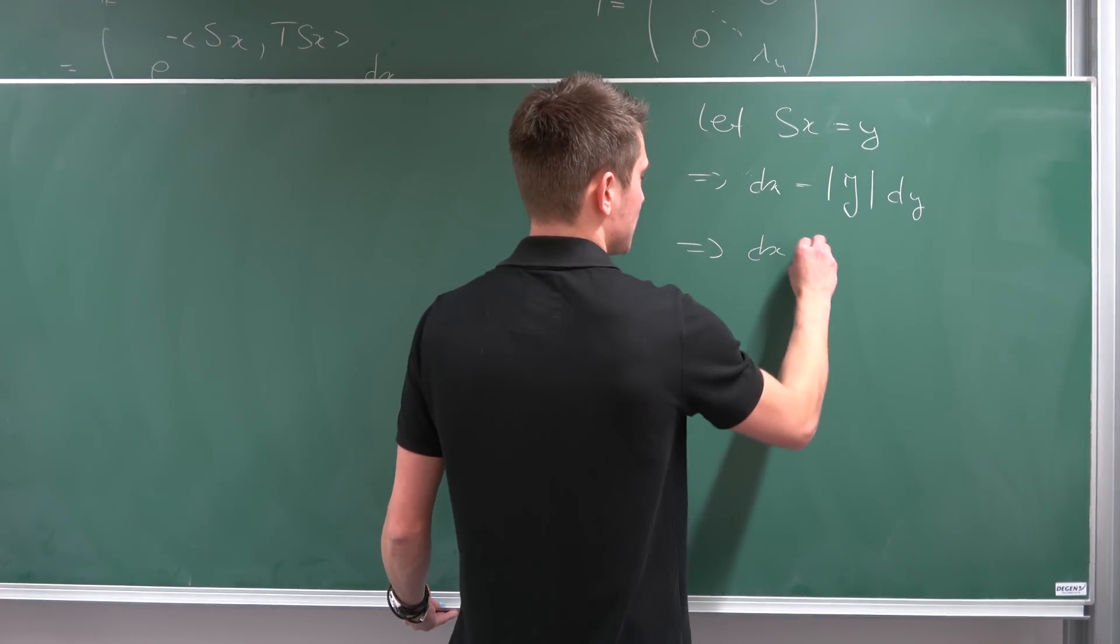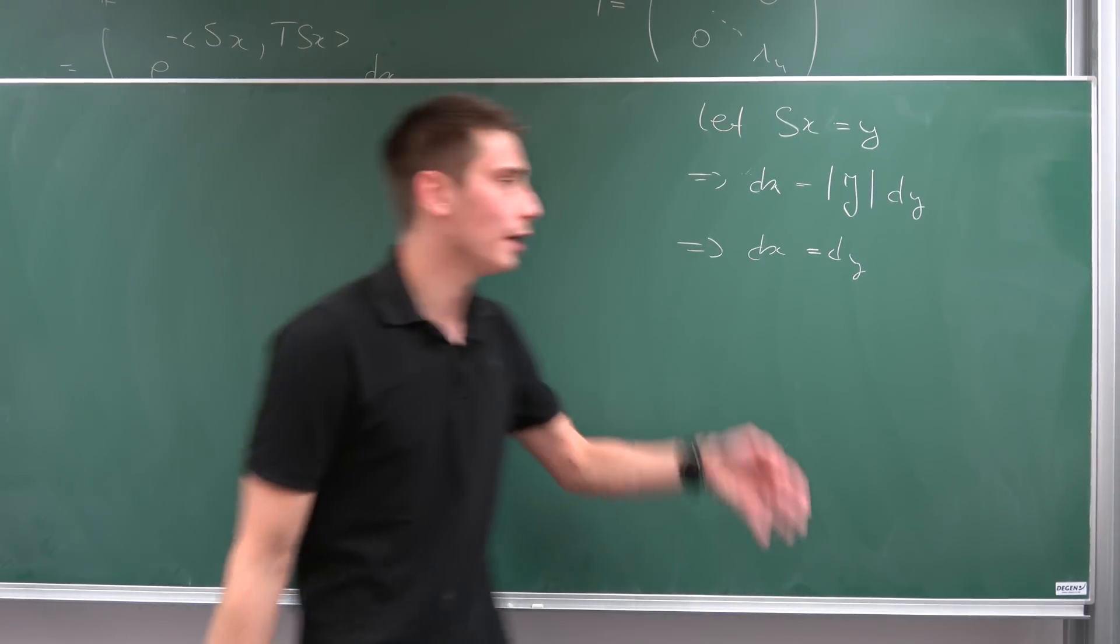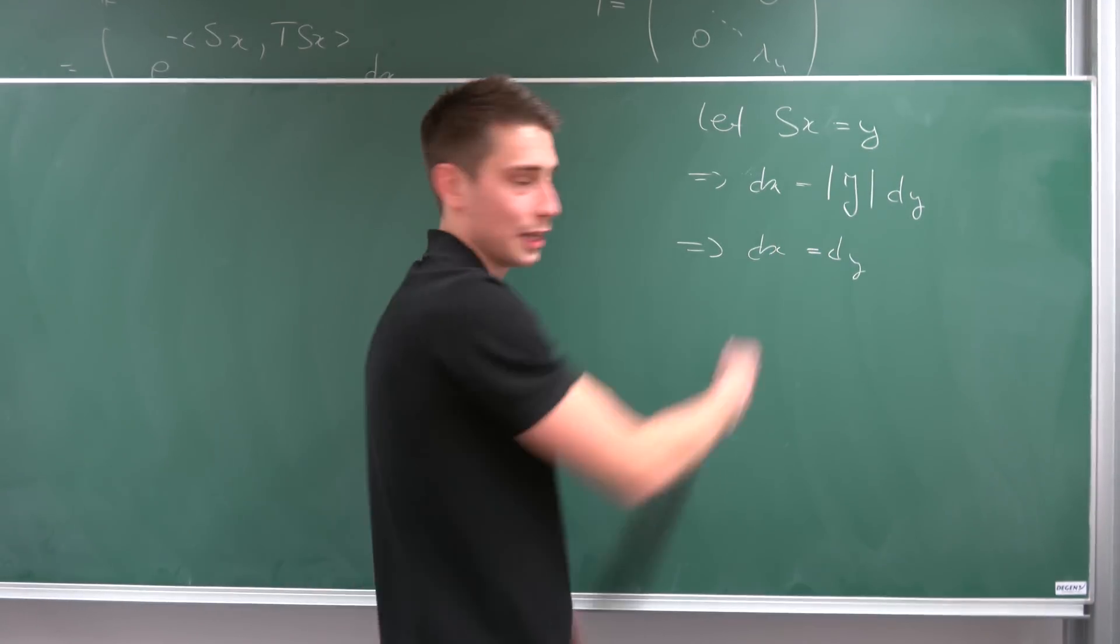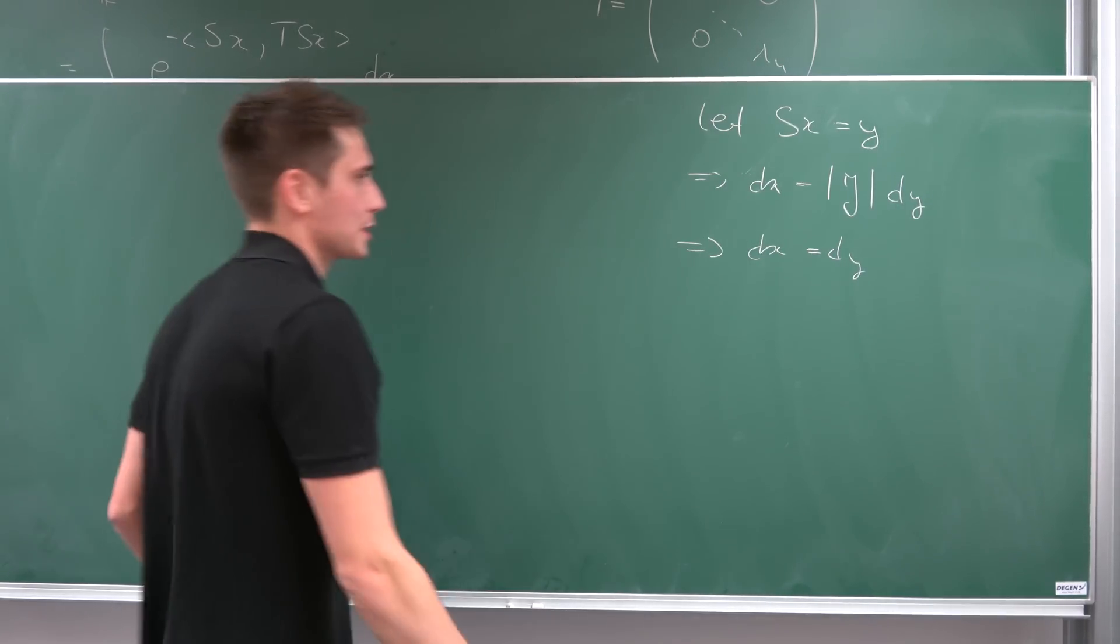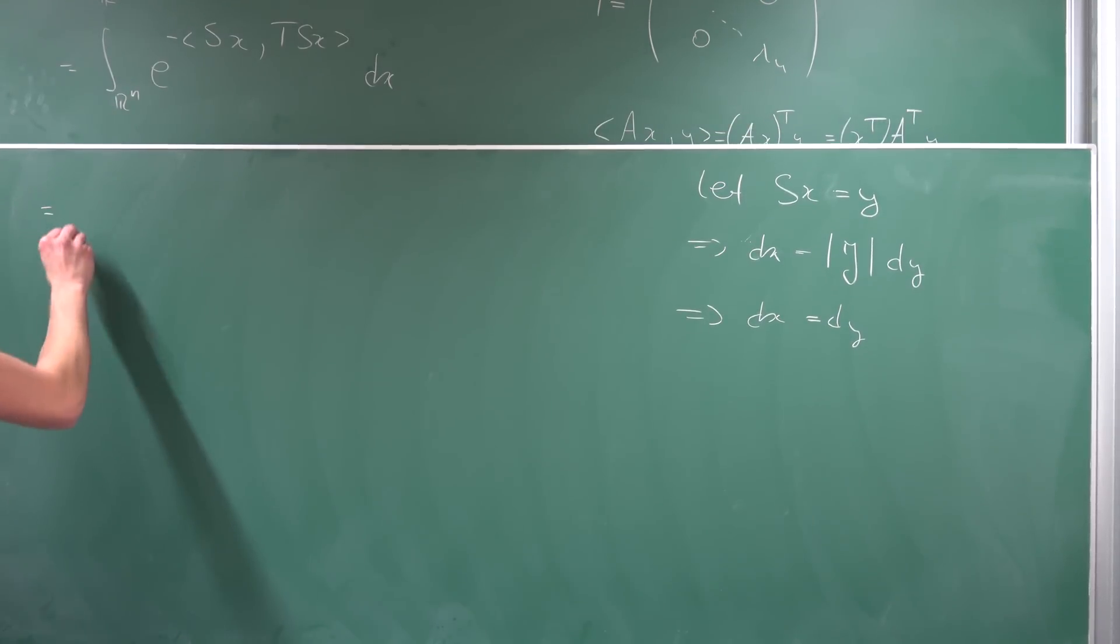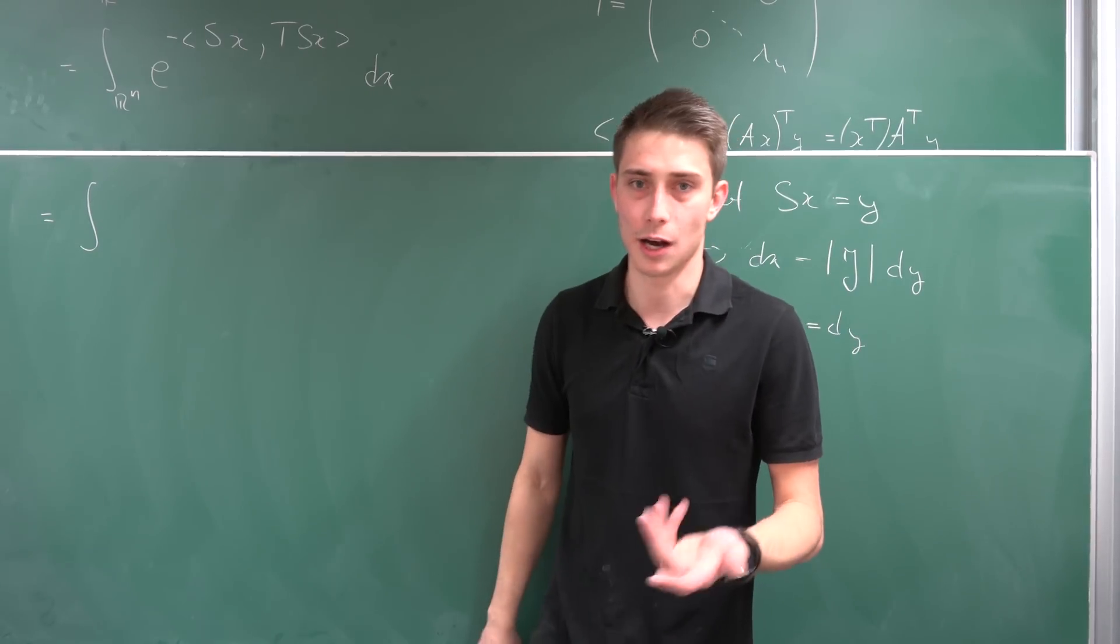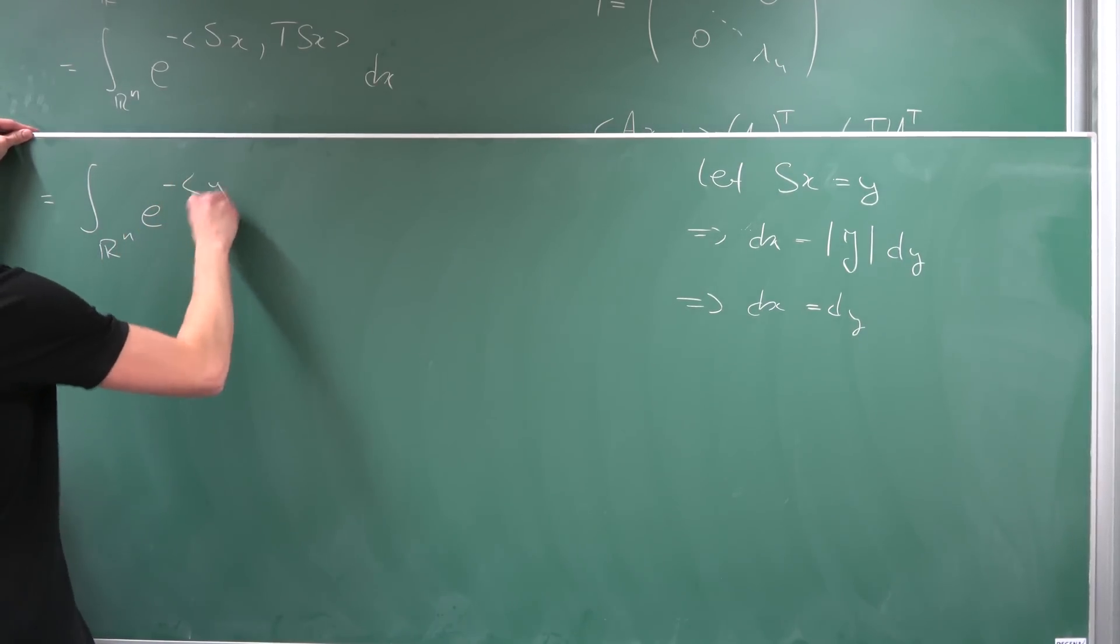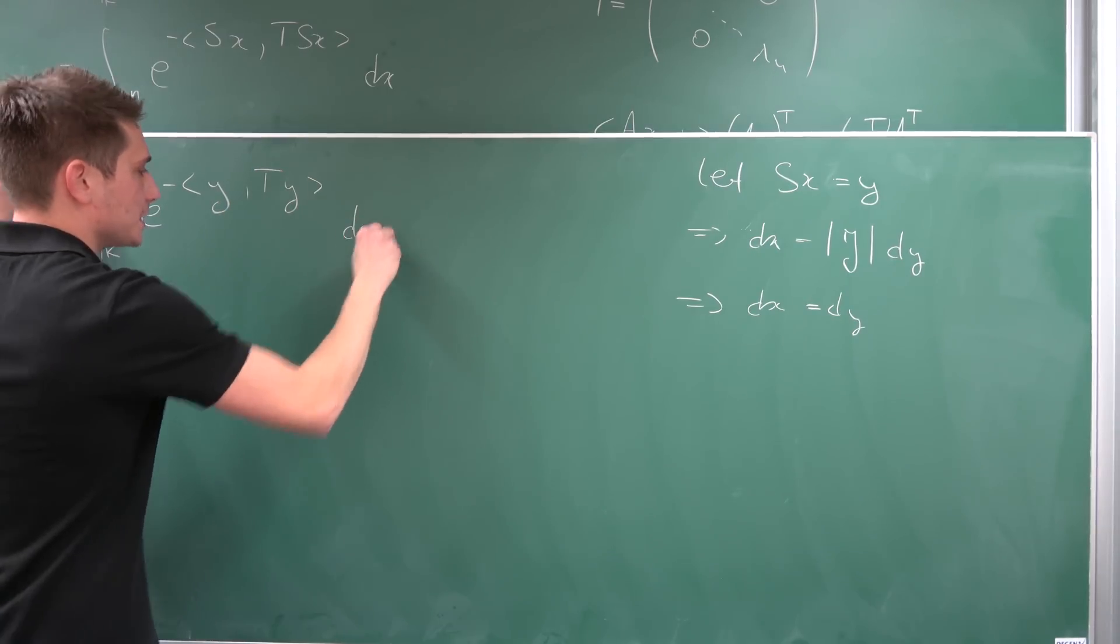Meaning dx is actually equal to dy. You can try it out with the simple matrix I gave you before. And it's going to make perfect sense actually. And this is a result that generalizes to bigger matrices than two by two matrices. If they are orthogonal at least. Meaning we can rewrite this as, okay, our region really doesn't change. We are still in r to the n at the moment. E to the negative inner product of y with t times y, dy in this case.